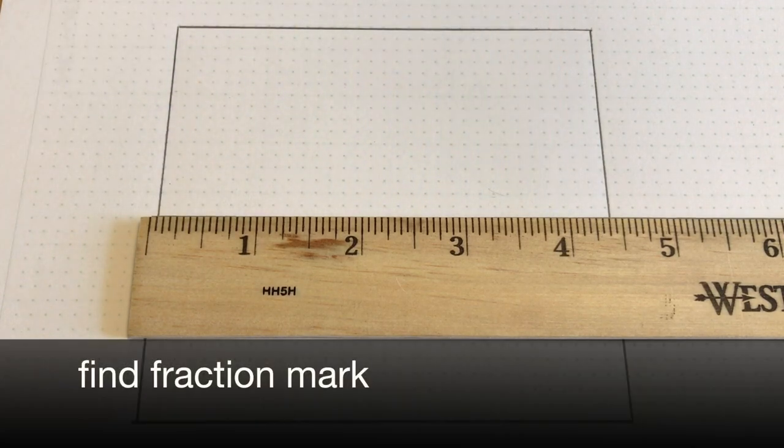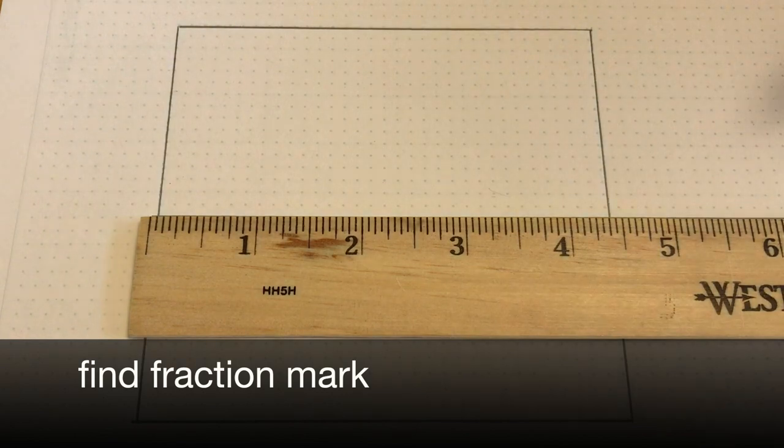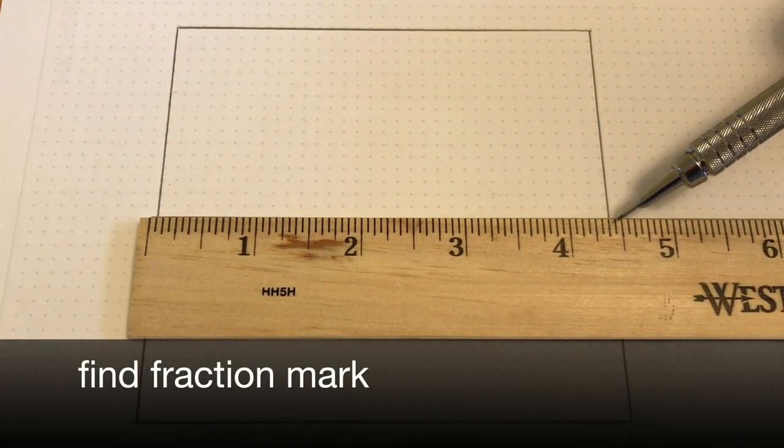Next, find the fraction for the measurement line closest to the edge of the object. In this example, it would be three eighths.